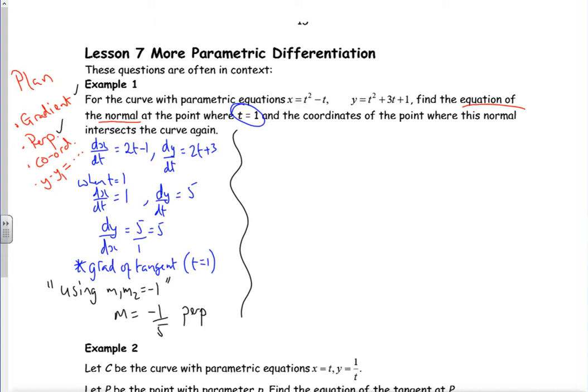So I've got the gradient, I've got the perpendicular, now I want the coordinates. So when t is 1, that tells us that x is 1 squared minus 1, that's 0, and y is 1 squared is 1 plus 3 is 4 plus 1 is 5. So I know when t is 1 it's 0 comma 5.